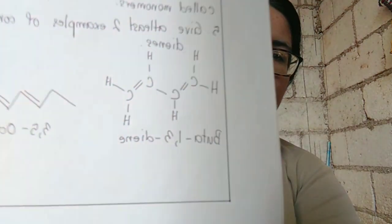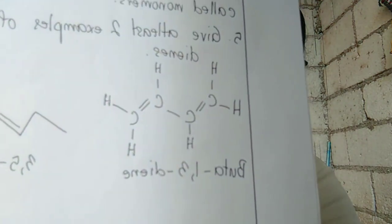Lesson 8, number 5: Give at least two examples of conjugated dienes. The first example is butane-1,3-diene, and the second example is 3,5-octadiene.